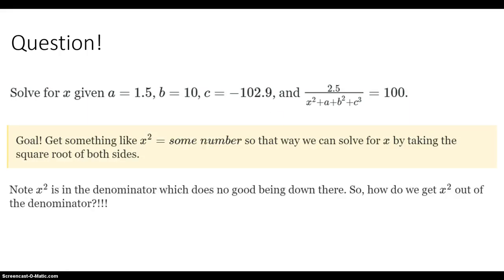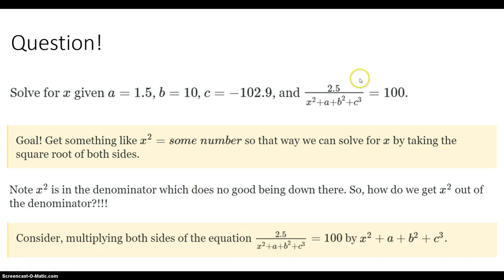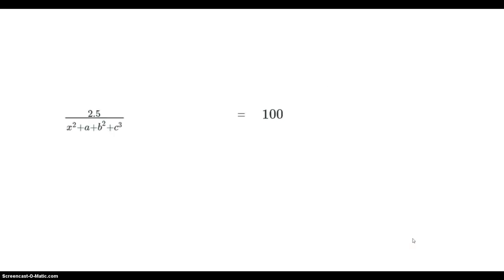So x-squared is in the denominator, and we need to get it out of there. How do we do that? Well, what if we multiply both sides by the denominator — the whole term: x-squared plus a, plus b-squared, plus c-cubed? We're multiplying both sides by the denominator of the equation.